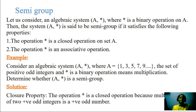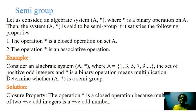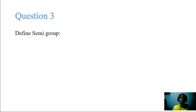Now, an algebraic structure called a semi-group has two properties: closure and associativity. If a set A with a binary operation star satisfies closed operation and associative operation, it is called a semi-group. For example, let A be the set of odd integers under multiplication. Multiplication of two odd integers is again an odd integer, so the closure property holds. The associative property is also true for odd integers. Therefore, the set of odd integers under multiplication is a semi-group.